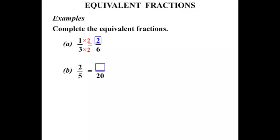The next one, 2 fifths equals something over 20. Again, looking at our bottom numbers, our denominators, the 5 we've turned into a 20 by multiplying by 4. So if we multiply the bottom by 4, we multiply the top by 4 as well. So on the top, our numerator, 2 times 4 becomes 8.